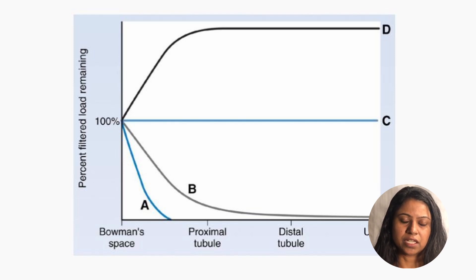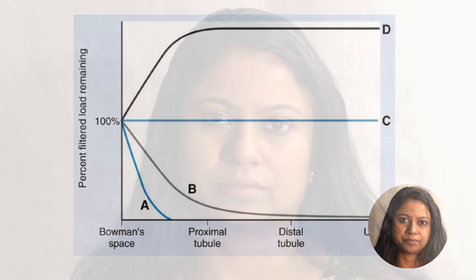The answer is zero, because albumin is not filtered by a healthy glomerulus, nor is it secreted at the tubules. Hope this video clears some of your concepts on renal clearance. Thank you for watching.